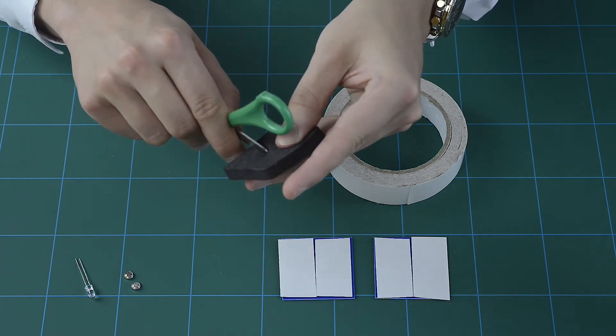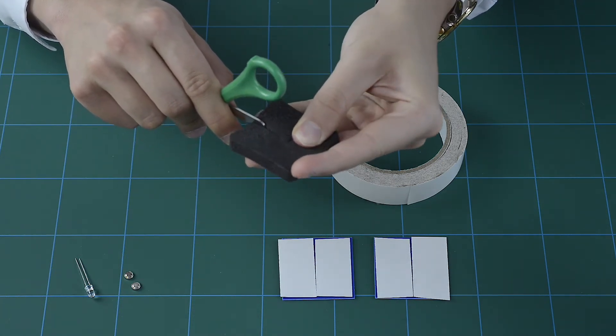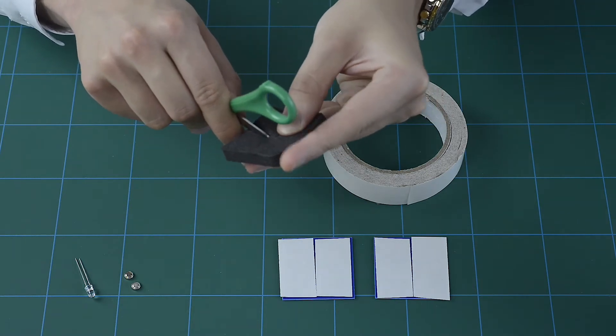Next, take your Plastazote foam and carefully score a slot down the centre to allow space for the LED anode.